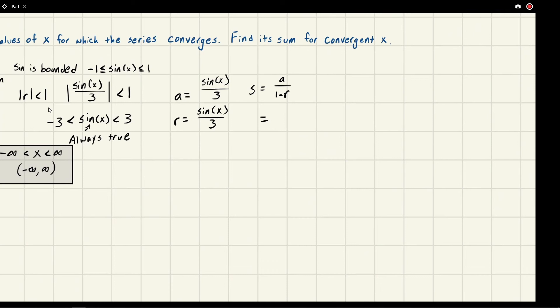We could just plug that in. We get sine x over three divided by one minus sine x over three. Multiply everything by three because it's kind of sloppy having all those things there.